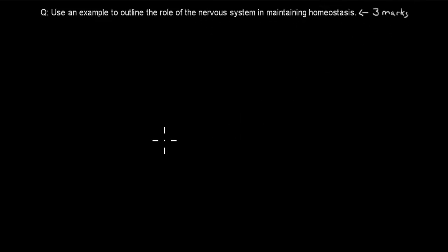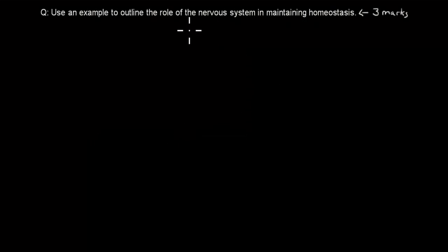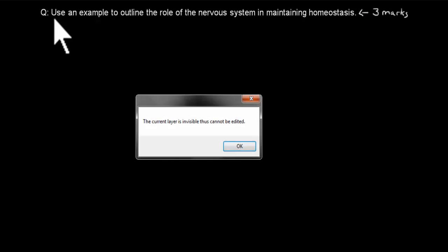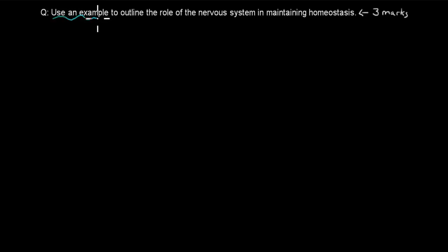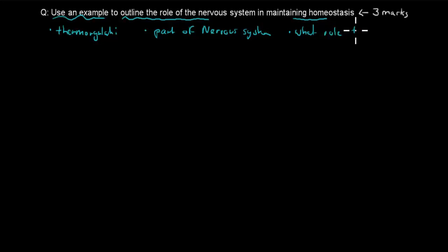That's worth three marks. So pause the video now, attempt the question, and when you're ready, press play and I'll go over the answer step by step. For this kind of question, you need to look at the actual question carefully. We have to give an actual example — in this case, we're going to talk about thermoregulation. I'll go through the parts of the nervous system and then explain what role these parts play in homeostasis, and if I do all that, I get three marks out of three.